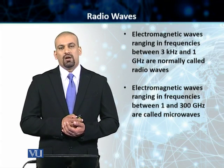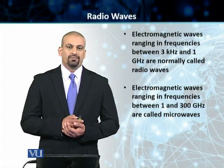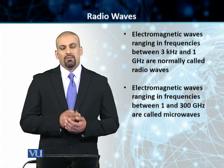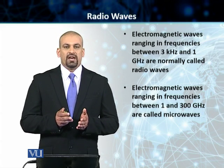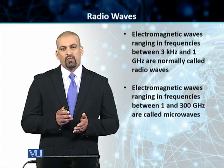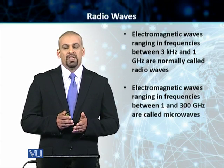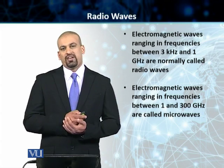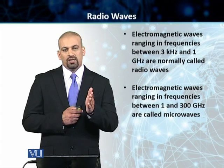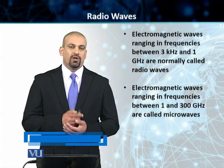Radio waves are mostly omnidirectional. By omnidirectional, what I mean is that your electromagnetic waves, which are your radio waves, they are transmitted in all directions. They are not very narrow; they are not line of sight.